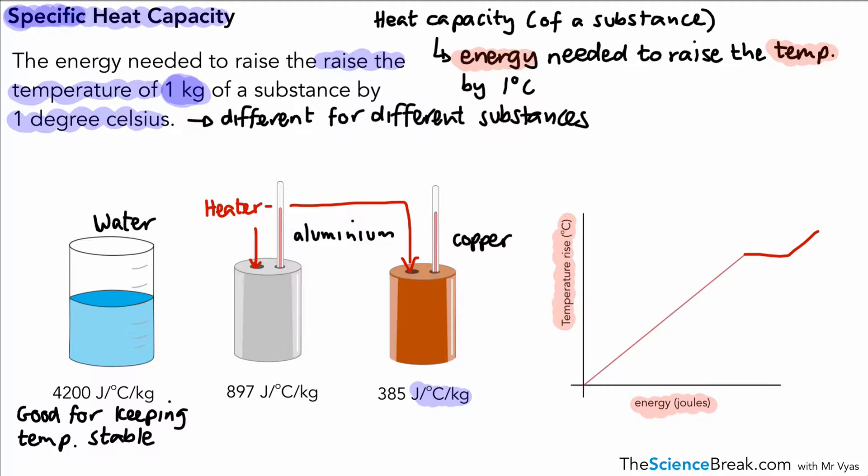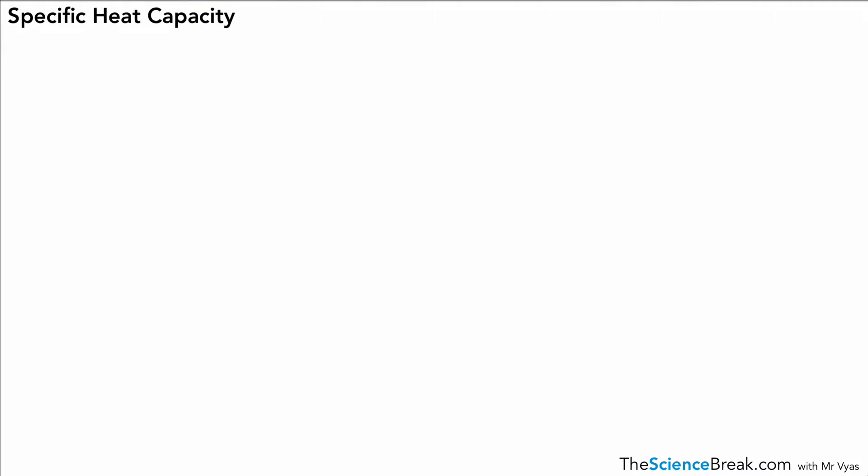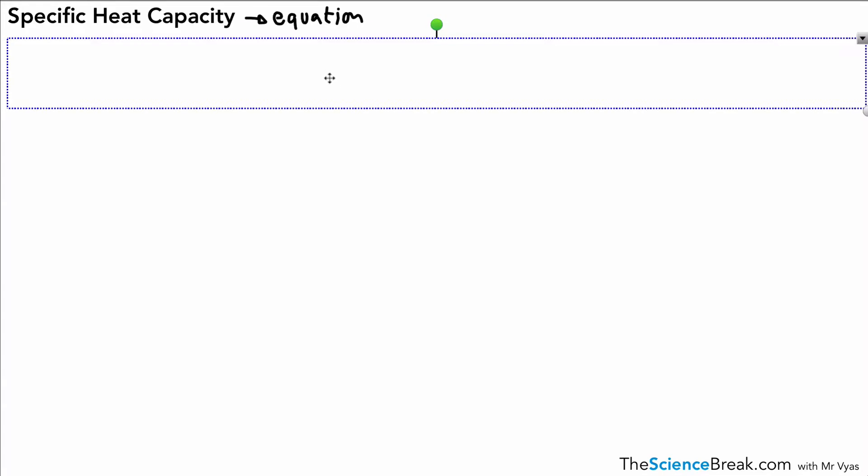So that's the meaning of specific heat capacity and how we use it to compare different materials. What we're going to look at now is an equation to help us do some calculations based around the idea of specific heat capacity. So here's an equation to calculate energy transfer using specific heat capacity. This is actually given to you in the exam, so you don't need to memorize this, and you'll have it in front of you on the equations sheet.